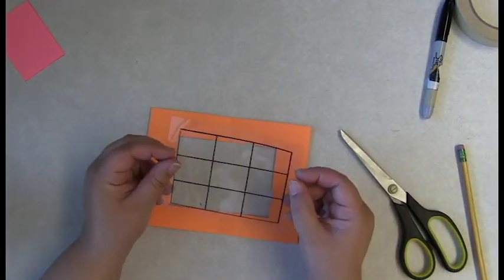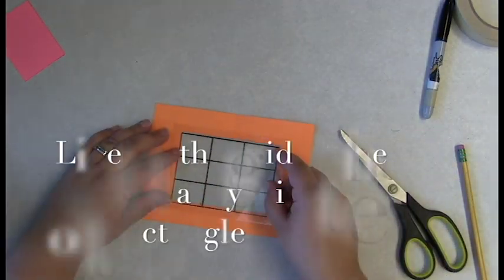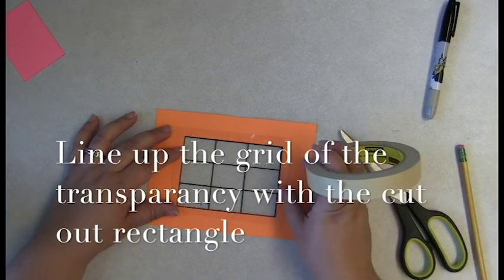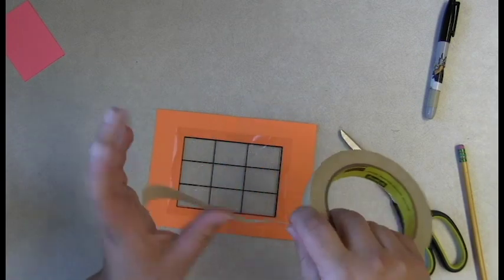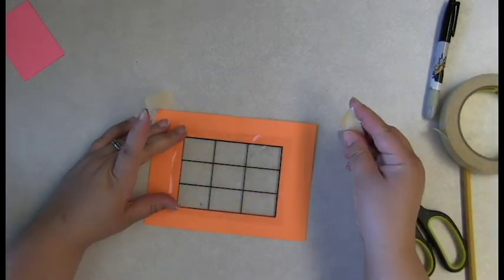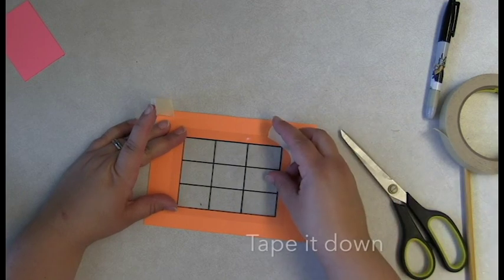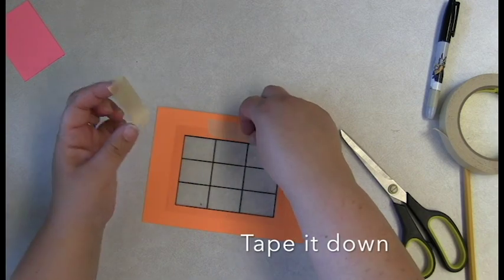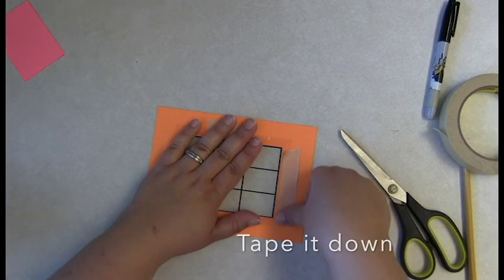You're then going to take your transparency, you're going to line it up with the edges. Take some tape, tape it down along the edges.